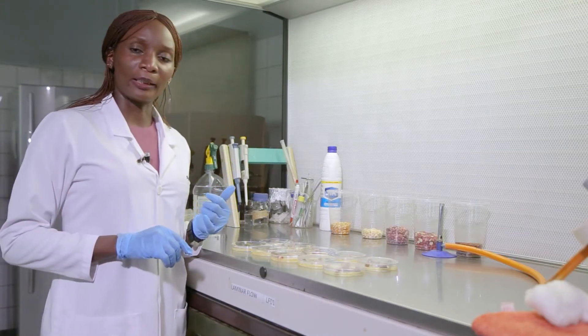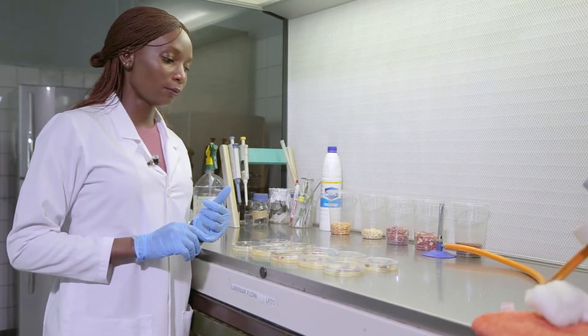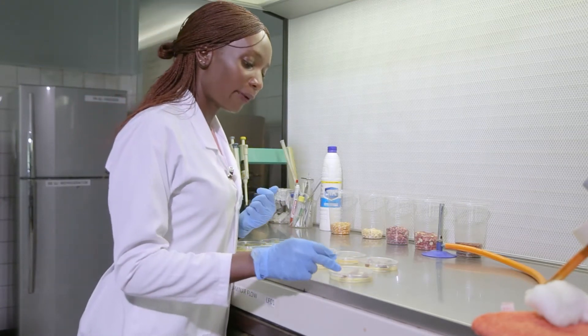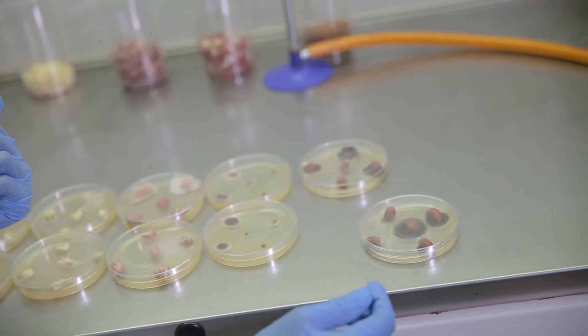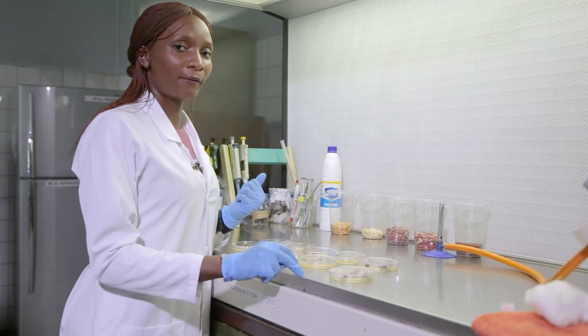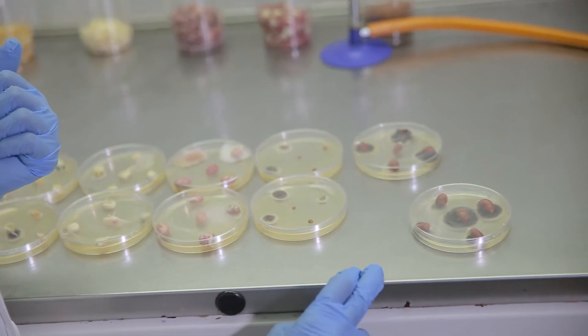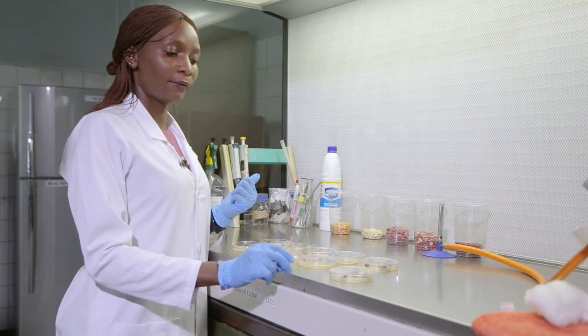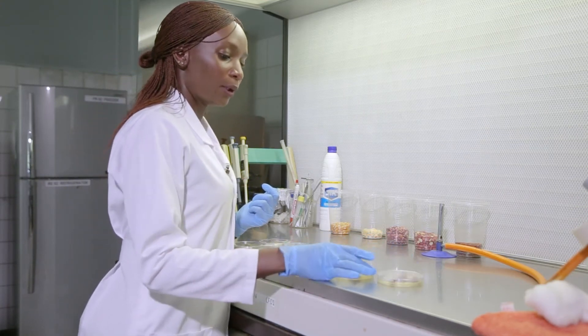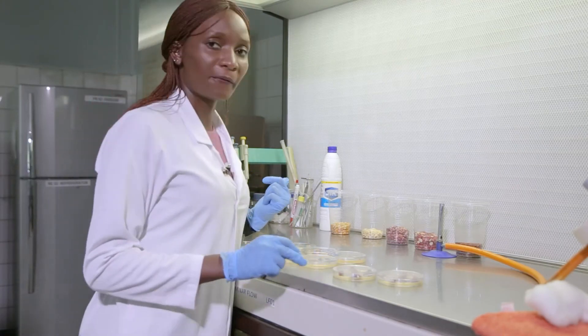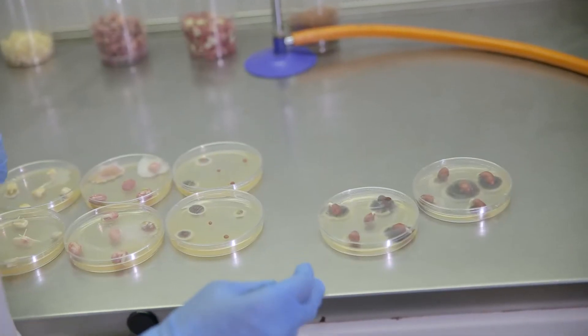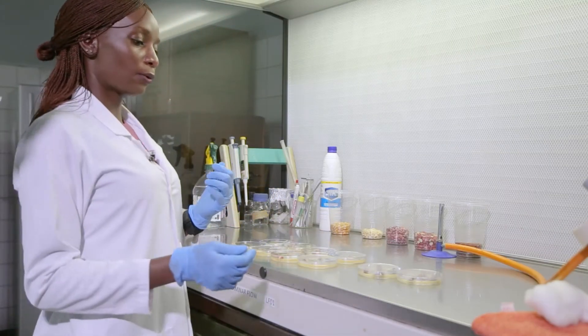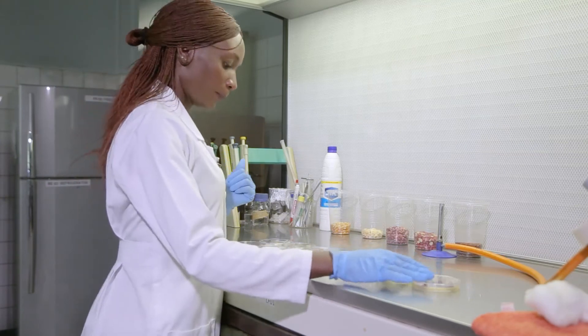The first thing that we do is to calculate percentage infection. For instance, if we look at plate A where we put our groundnut, we see that all five seeds have molds. So that will be 5 out of 5 times 100, which is 100%. When we look at the duplicate plate, we also have 5 out of 5 seeds that are infected with the fungi. So we are going to get the average. It will be 100 plus 100 out of 2, so we have 100% infection here.